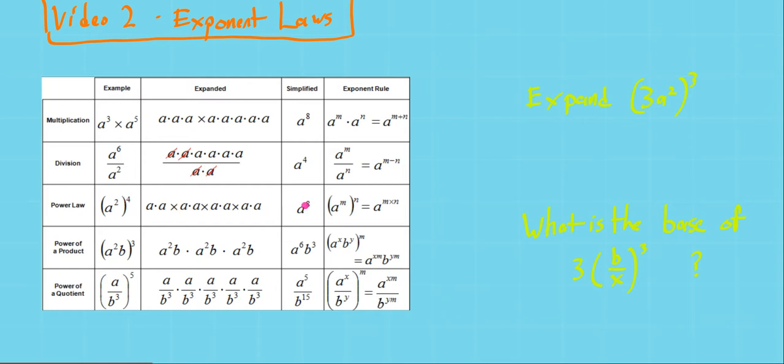So there's 8 a's overall, which is the same as a to the 2 times 4. So if you have an exponent of an exponent, you end up multiplying those exponents.